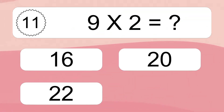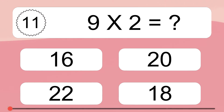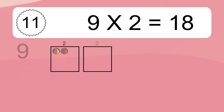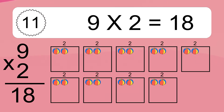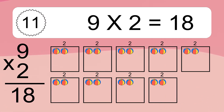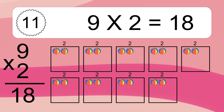9 times 2 equals what? 9 times 2 equals 18. We have 9 boxes, and each box has 2 colorful balls inside. If you count all the balls in all the boxes together, you will have 9 times 2 balls. This equals 18 balls.